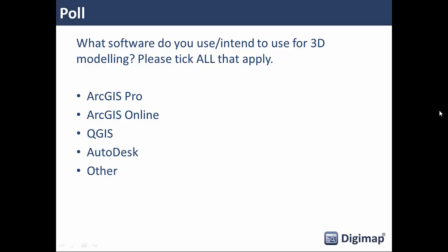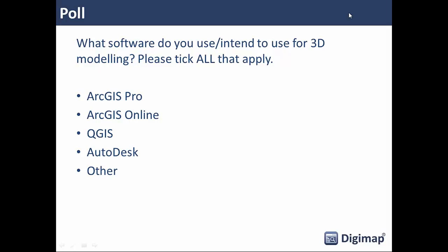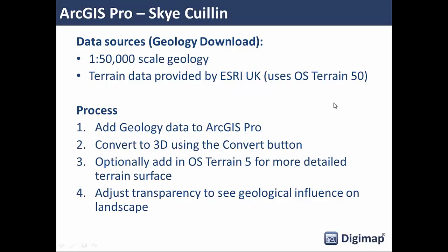Most people have answered so I'll share the results. We've got quite a mix — quite a few people using ArcGIS Pro, which is good to see because that's fairly new, and Autodesk products too. Good spread there. Thanks to anybody who filled in the other fields as well. So the first thing we're going to look at today is ArcGIS Pro. We're going to do two separate examples; the second one will feed into ArcGIS Online. The first one is a simple example — we're going to look at some geology data.